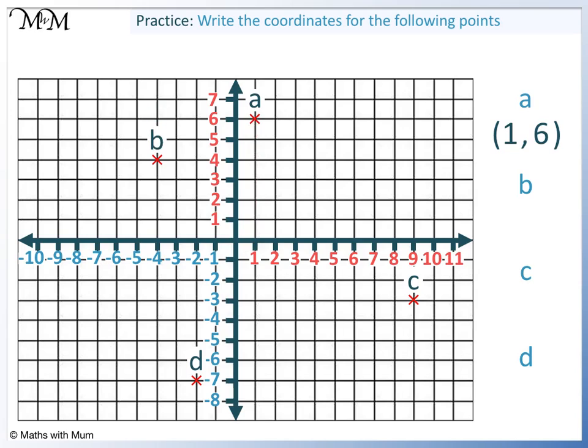Question b. Reading across we have -4. Reading up we have 4. The coordinates are (-4, 4).